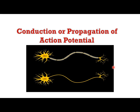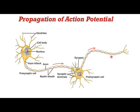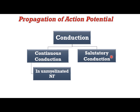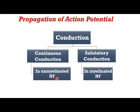The last part is the conduction or propagation of the action potential. Once an action potential is generated at the start of the axon, it is conducted along the axon to reach another neuron or, in the case of a motor neuron, to reach the muscle. We have two types of conduction: continuous conduction in unmyelinated nerve fibers and saltatory conduction in myelinated nerve fibers.